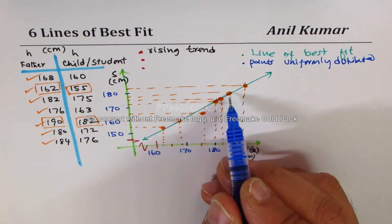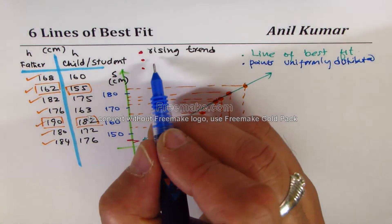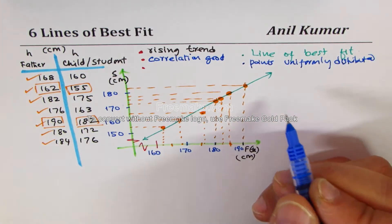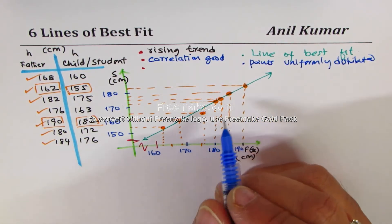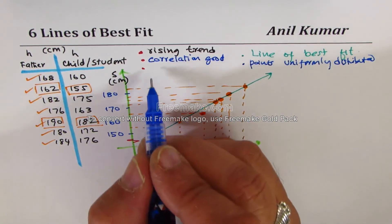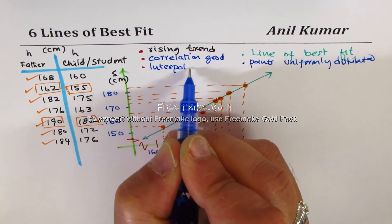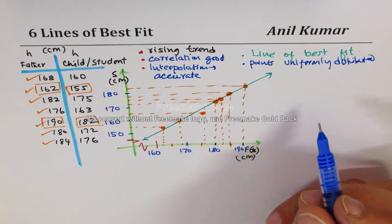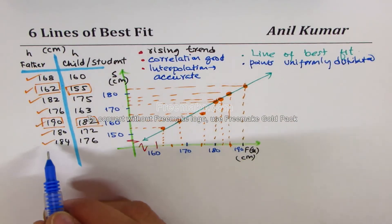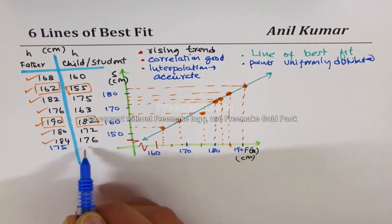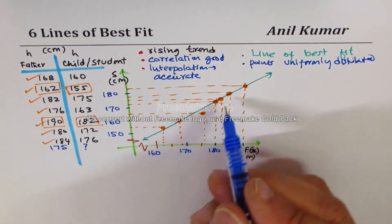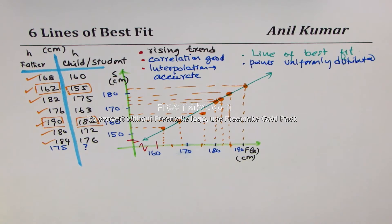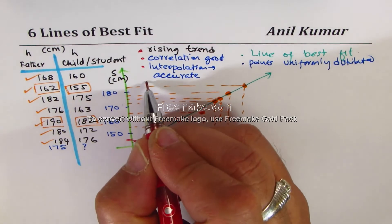Since most points are on or close to the line, we will say the correlation is good — not the best, as some points are away, but it is good. That means interpolation will be accurate. For example, if I want to know the height of a student whose father's height is 175 — that is in between our data — that interpretation from the graph will be accurate.